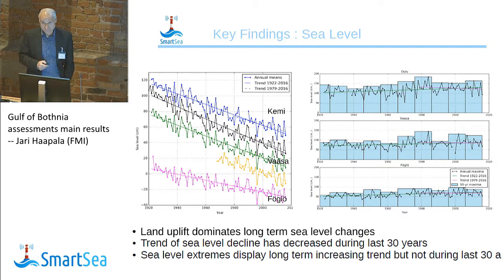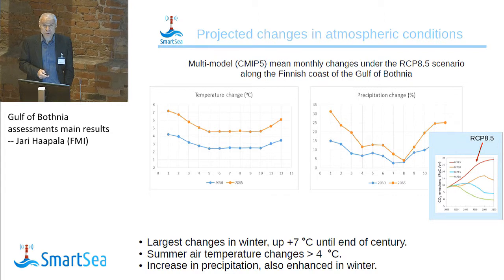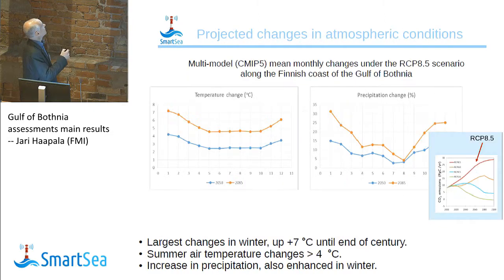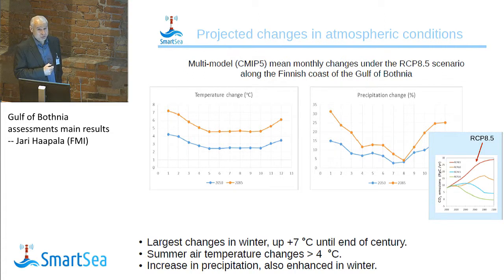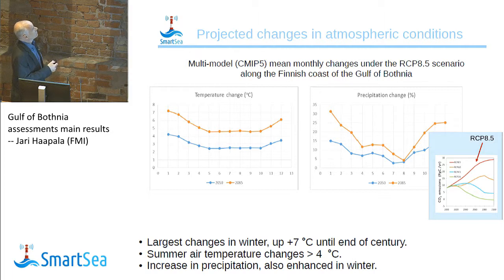Looking at the future, it seems that these trends are continuing — it depends on our policy. We have two scenarios here: the red one is business as usual and the blue one is about the Paris Agreement. It's pretty clear that if we cannot agree to do climate mitigation as agreed in Paris, then we are on a track that leads to even 7 degrees of warming in wintertime per century, and 4 degrees in summertime per century. But even with the Paris Agreement, we will have quite significant changes, and in precipitation we also have quite significant projected changes.